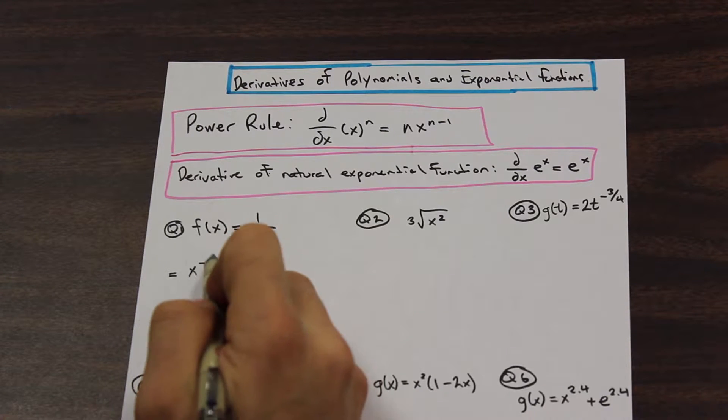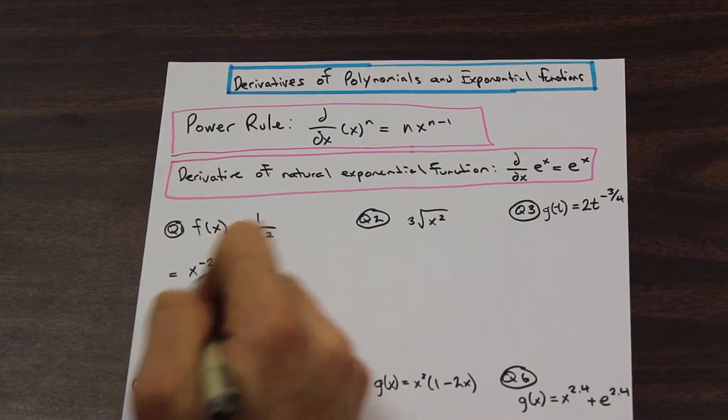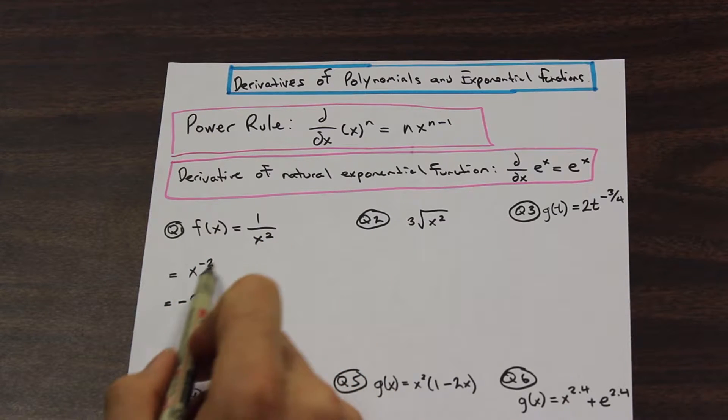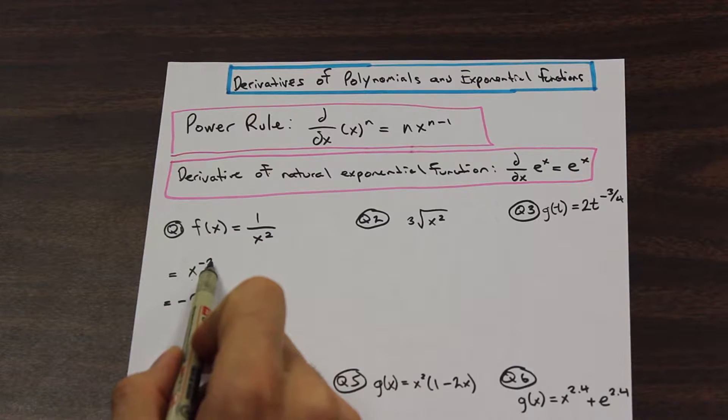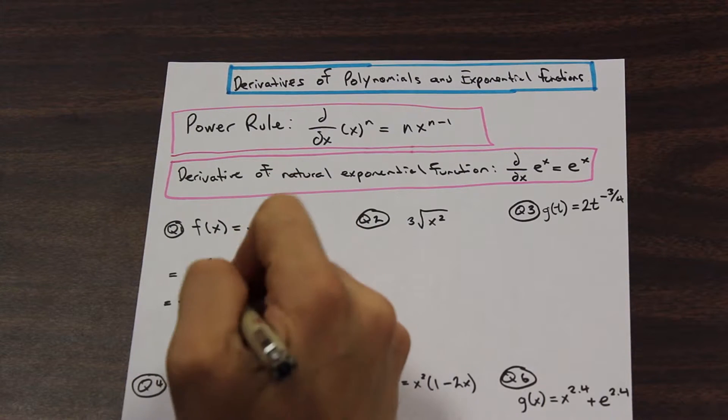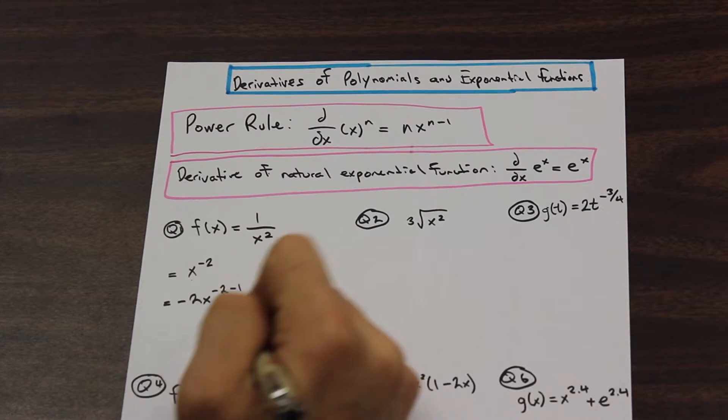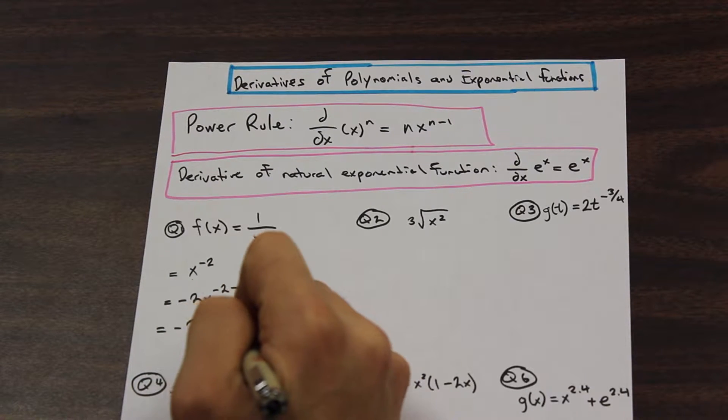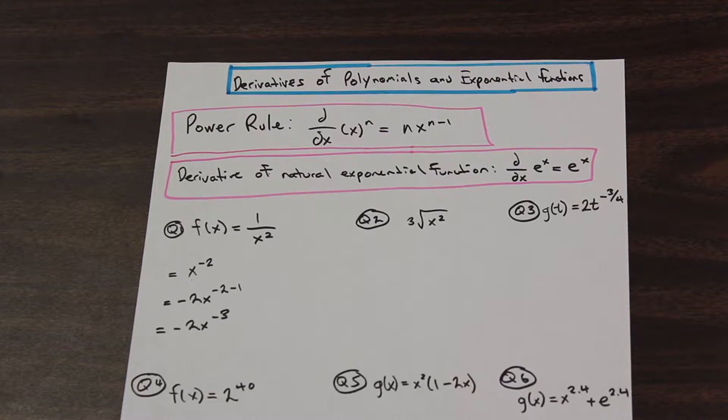So we're going to take this n here, which is negative 2, and we're going to multiply that. So we have negative 2x. And what is n minus 1 here? Well, that's a good question. n minus 1 here is negative 2 minus 1. So we are left with negative 2x to the negative 3. And that is our derivative.